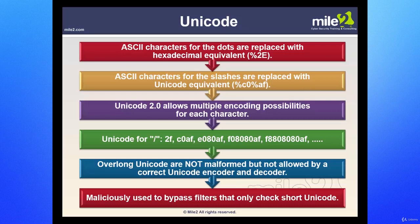When it comes to Unicode attacks, the ASCII characters for dots are replaced with hexadecimal equivalents — for example, %2e. ASCII characters for slashes are replaced with the Unicode equivalent %c0%af. Unicode also allows multiple encoding possibilities for each character: for the slash it could be 2f, c0af, or e080af, and so on. Overlong Unicode is generally not malformed, but not allowed by correct Unicode encoders and decoders.